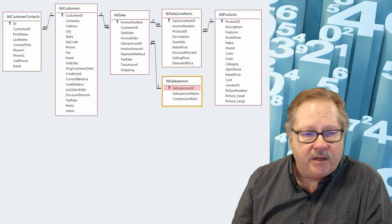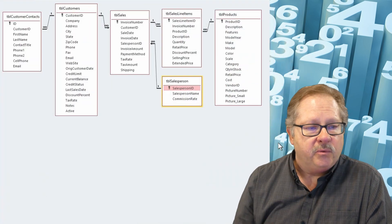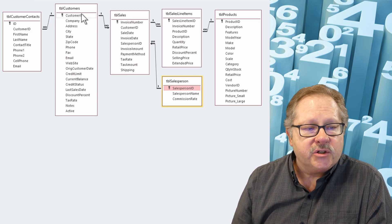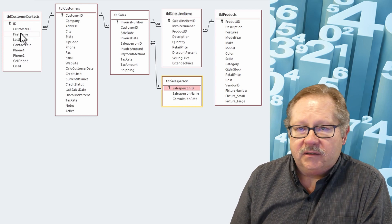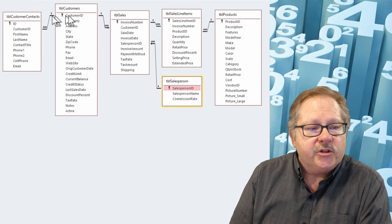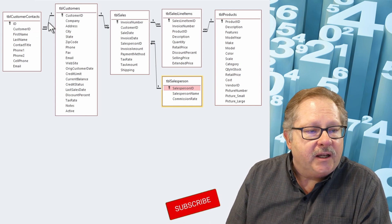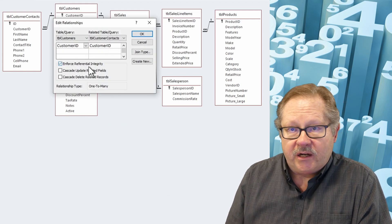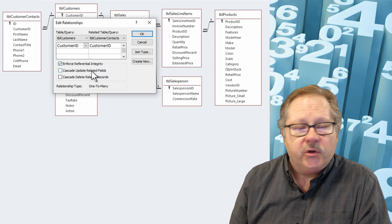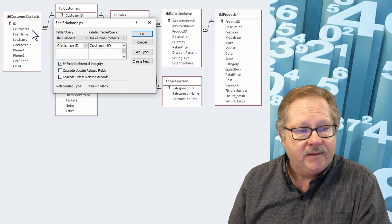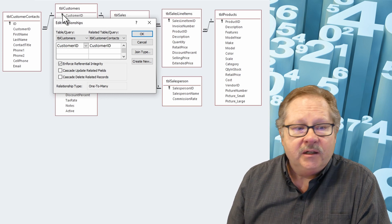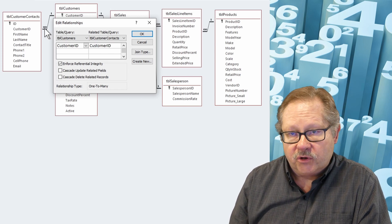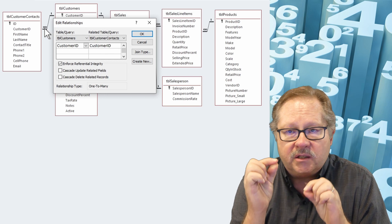If we look at the database from the last video, we can see that referential integrity is enforced here — for every customer there's a contact. In this relationship, if we go into edit mode, we can see the referential integrity is enforced. Based on the last video, you could have told that because the infinity symbol is on the one side and the one side shows the customer ID. So you know it is a one-to-many relationship, and referential integrity is enforced because those symbols are on the two sides of the link.